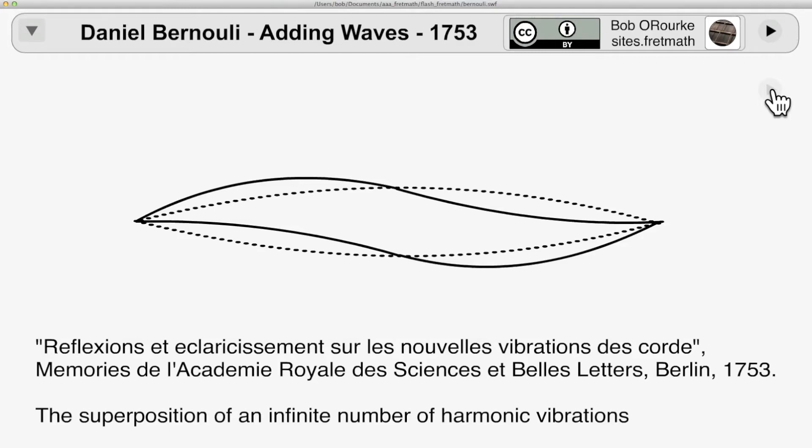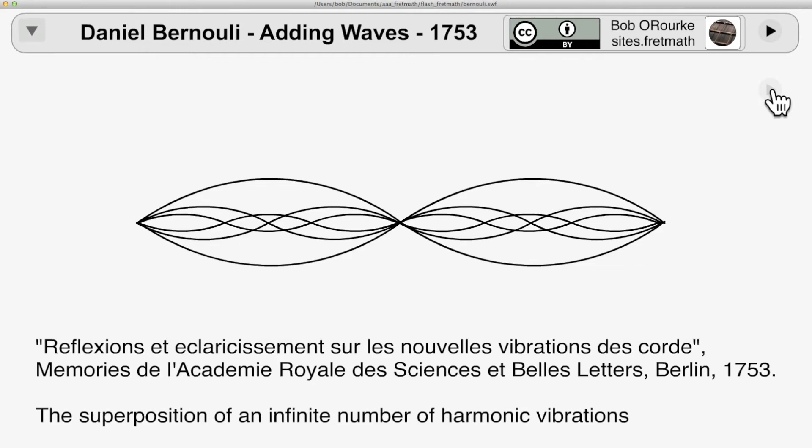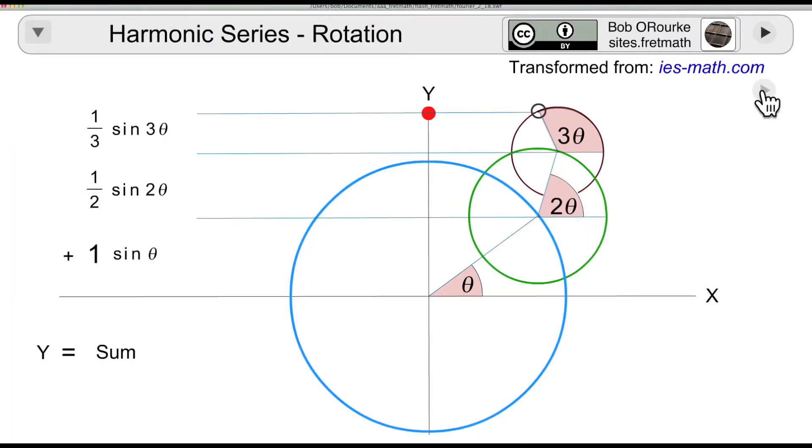Daniel Bernoulli first suggested the idea, but apparently he wasn't rigorous enough. Today we call it the Fourier series. Now this kind of rotational imagery is a little bit better for the internet.